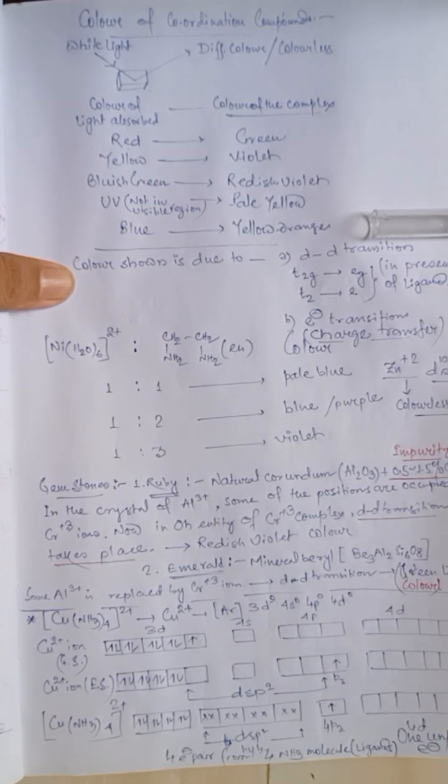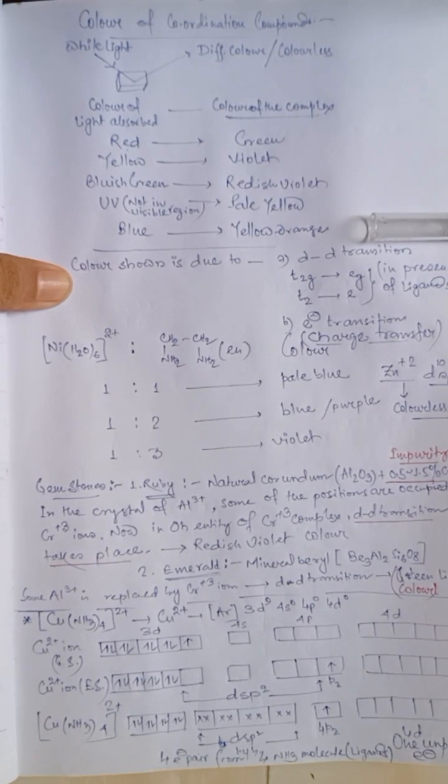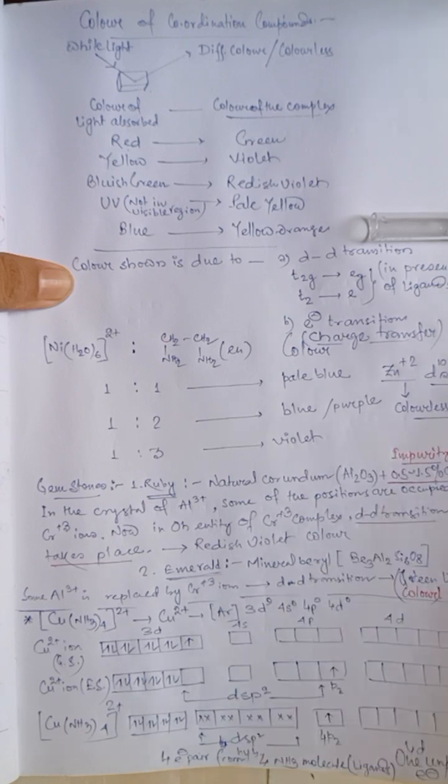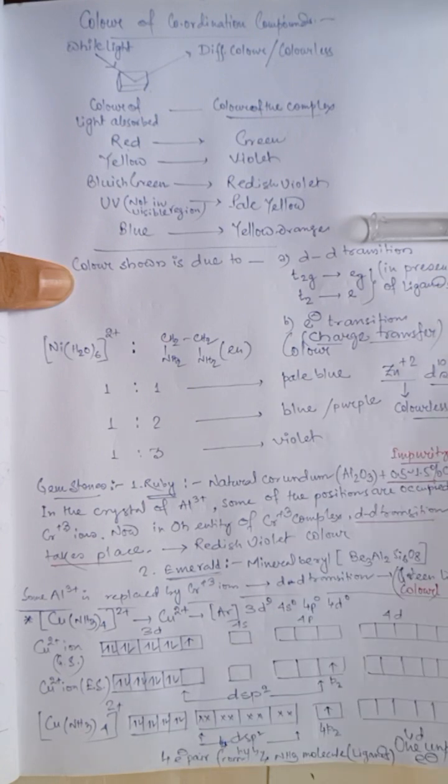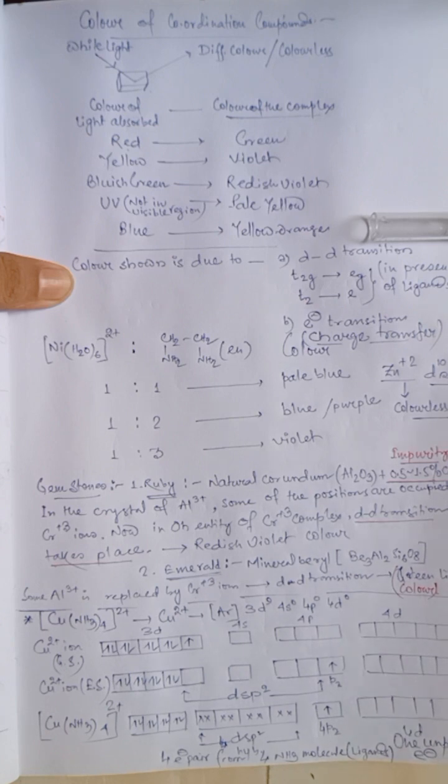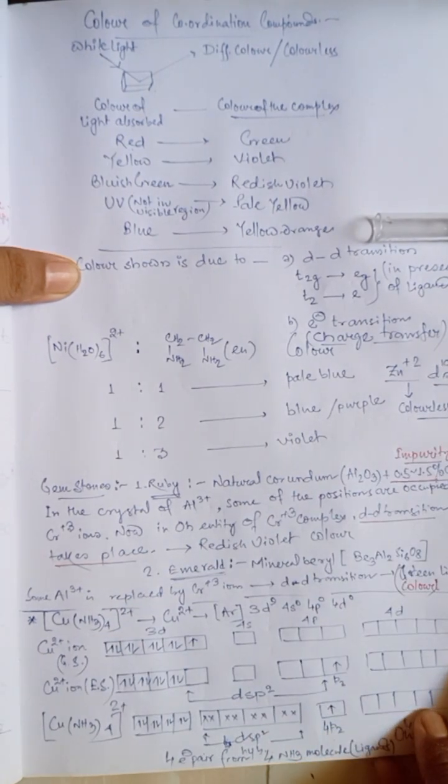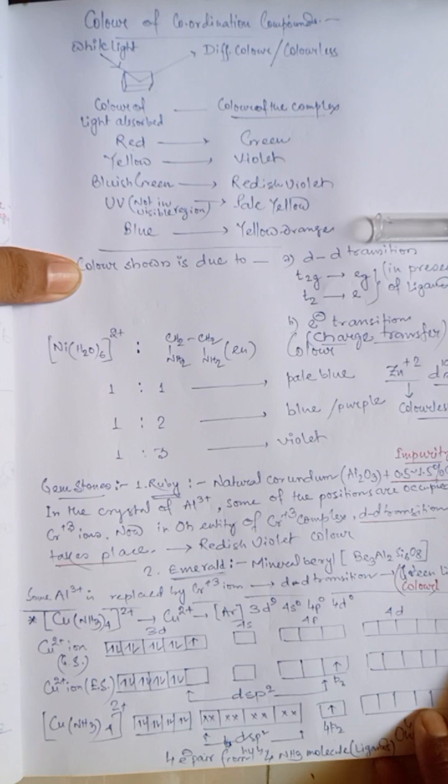Now, we are going to discuss a different scenario. That is, copper NH3 whole core 2 plus ion. This complex shows paramagnetic nature. But, in this paramagnetic nature, copper has only one unpaired electron.